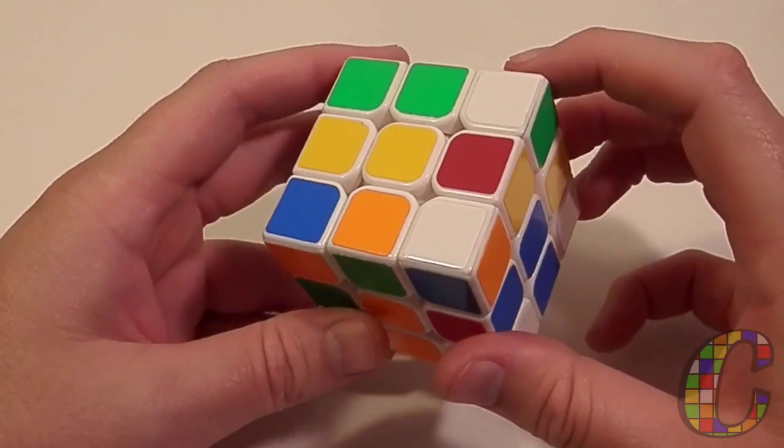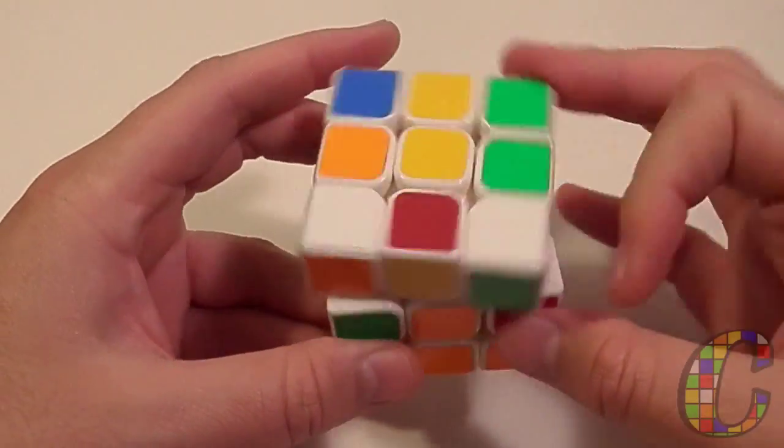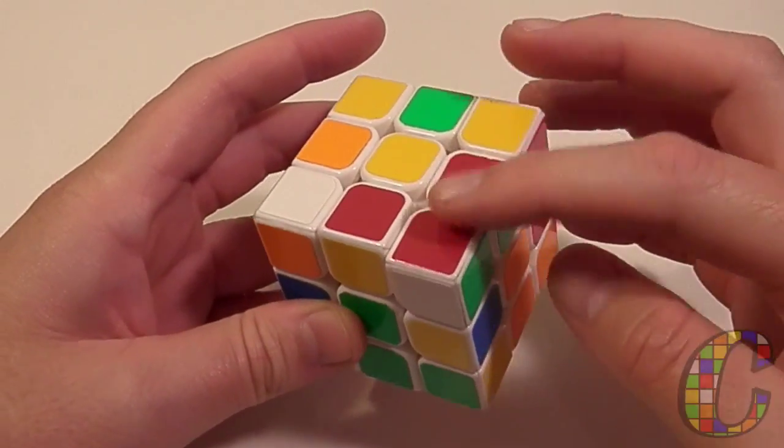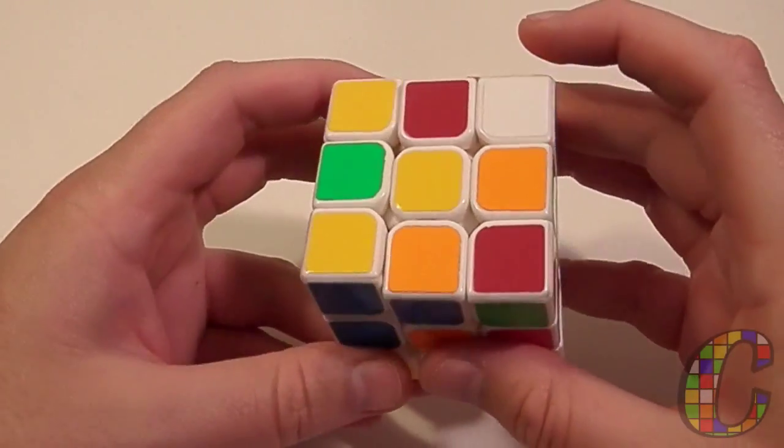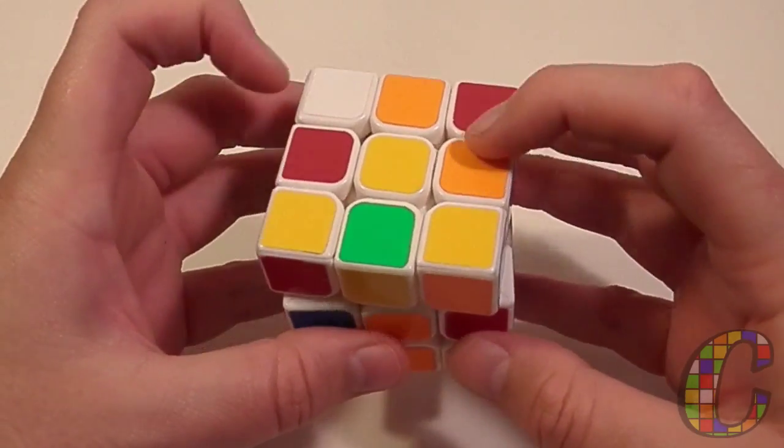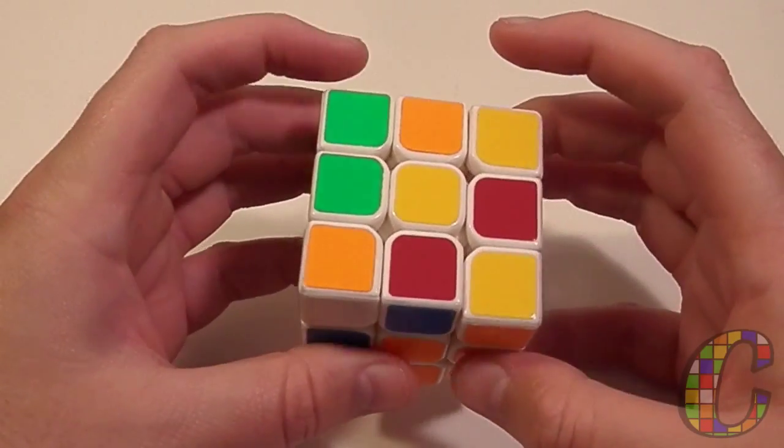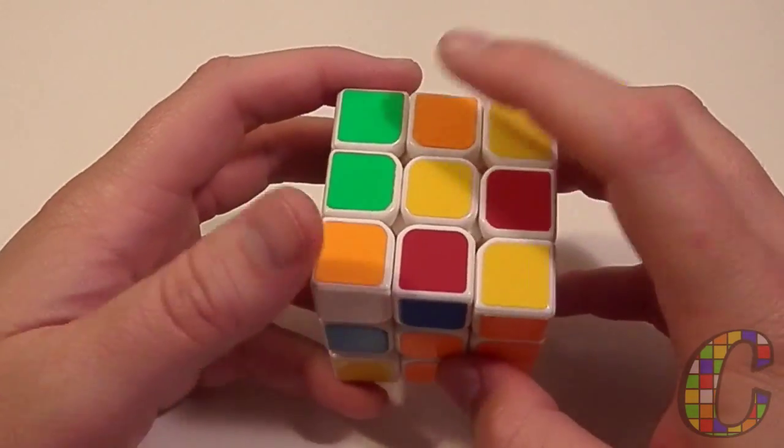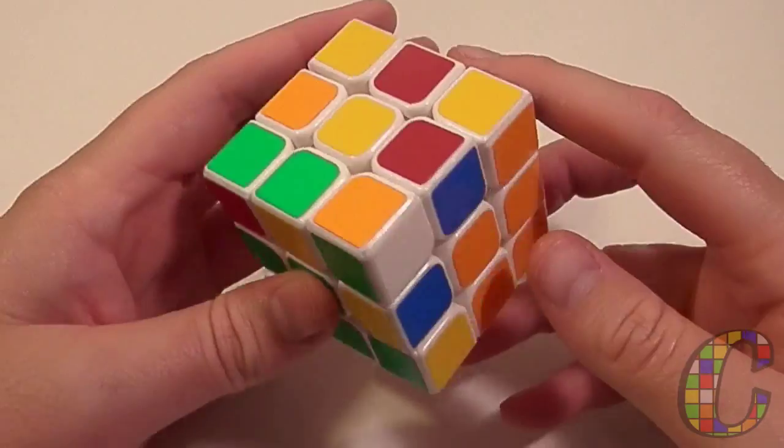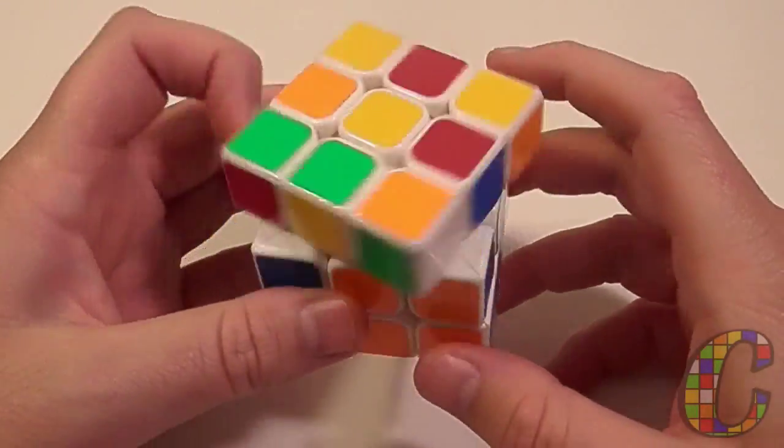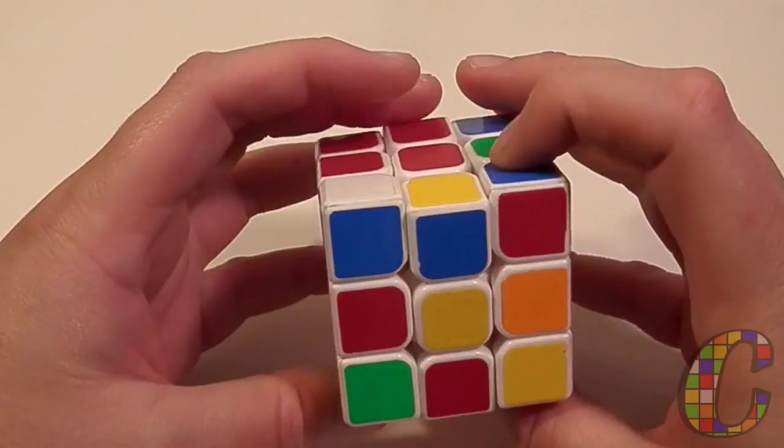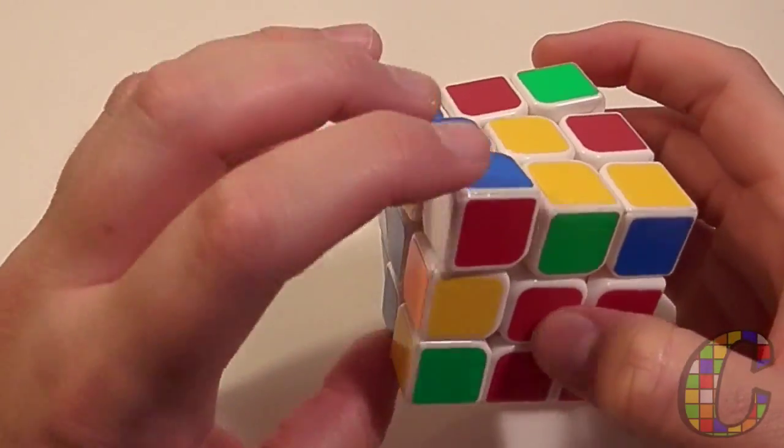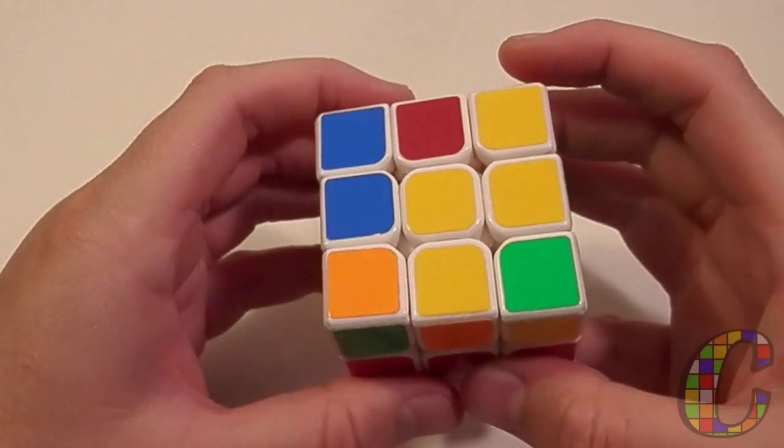Right off the bat, I see these two. For some reason. So, I would put them together. Reverse sexy move twice. Put them in the top layer. Put it in the back. Then you've got these two. And then, I think... Well, I've lost the piece. Okay, there they are. The green and orange. Recognition, as you can tell, is one of my big problems.